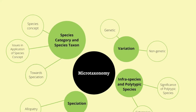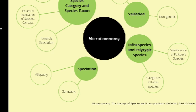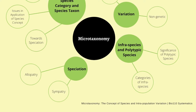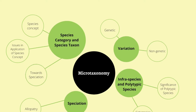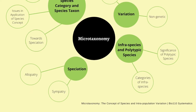The next topic we're looking into is speciation — specifically allopatry and sympatry — and you have to be able to discuss the process of speciation and differentiate the different types. Next is variation, covering genetic and non-genetic types. The fourth topic is about infraspecies and polytypic species, where you should be able to discuss infraspecific categories, contrast them, and look at the significance of polytypic species.